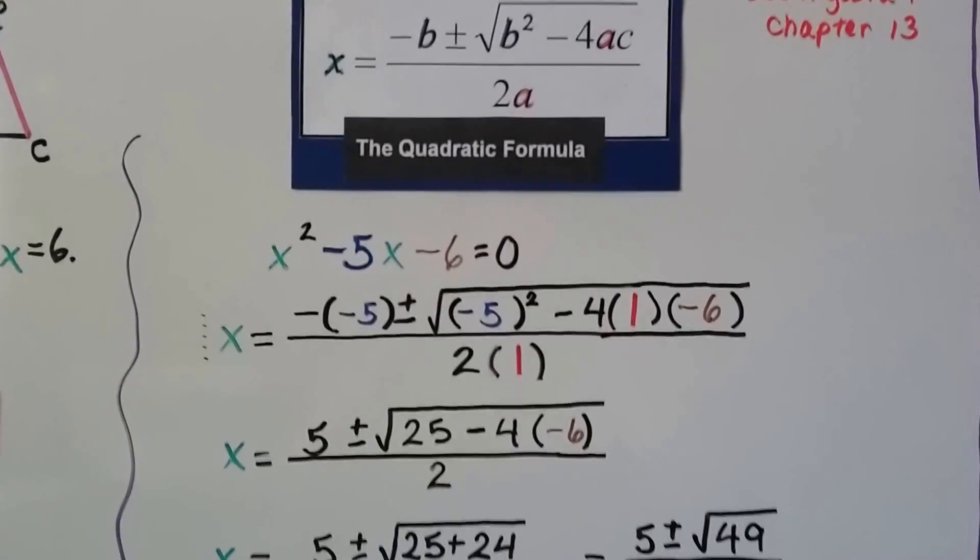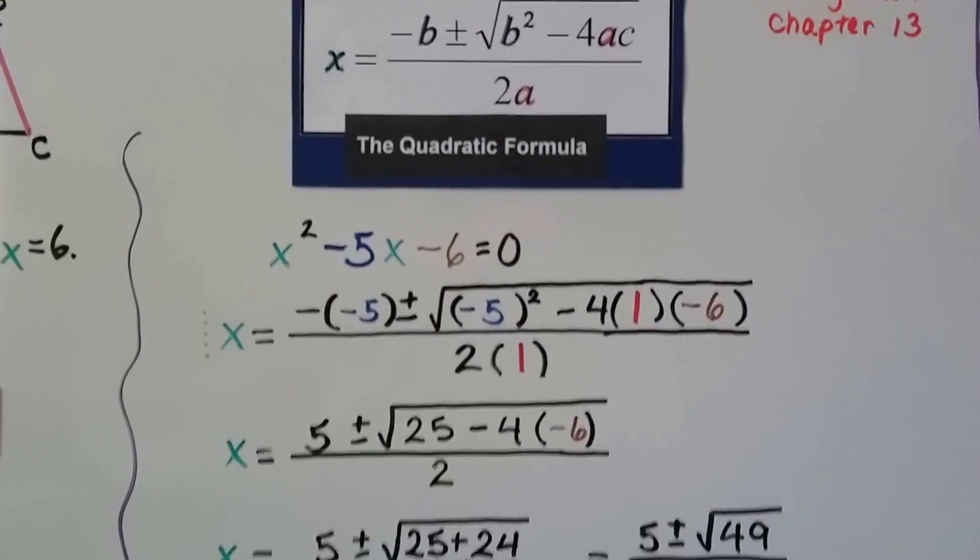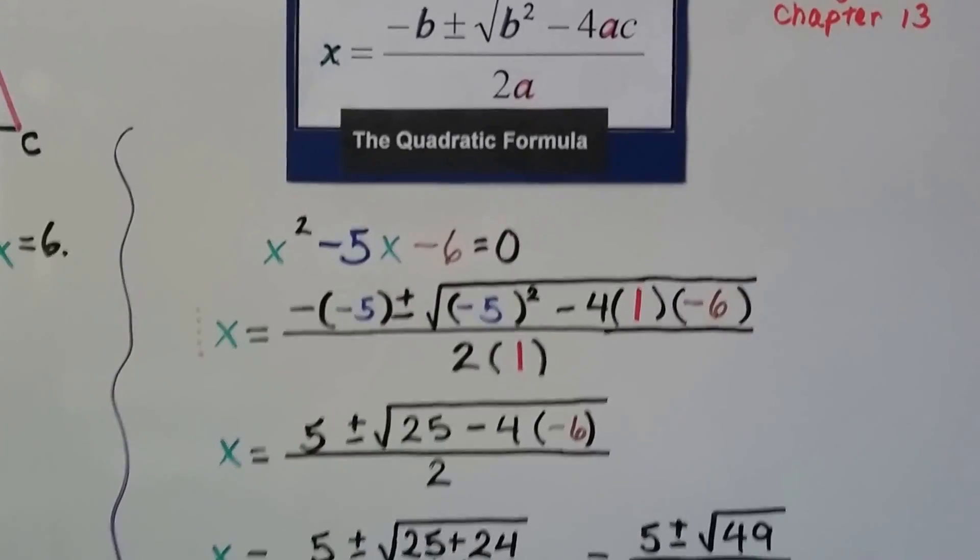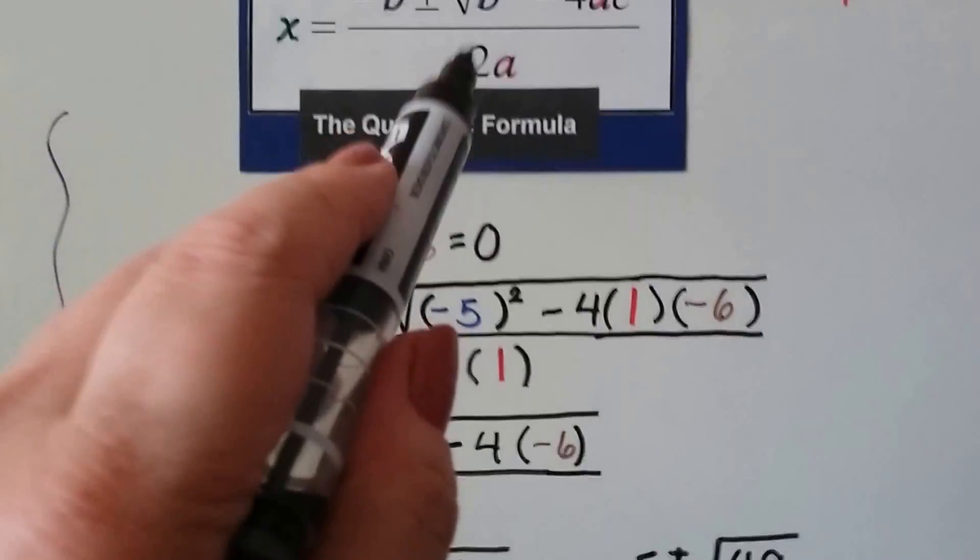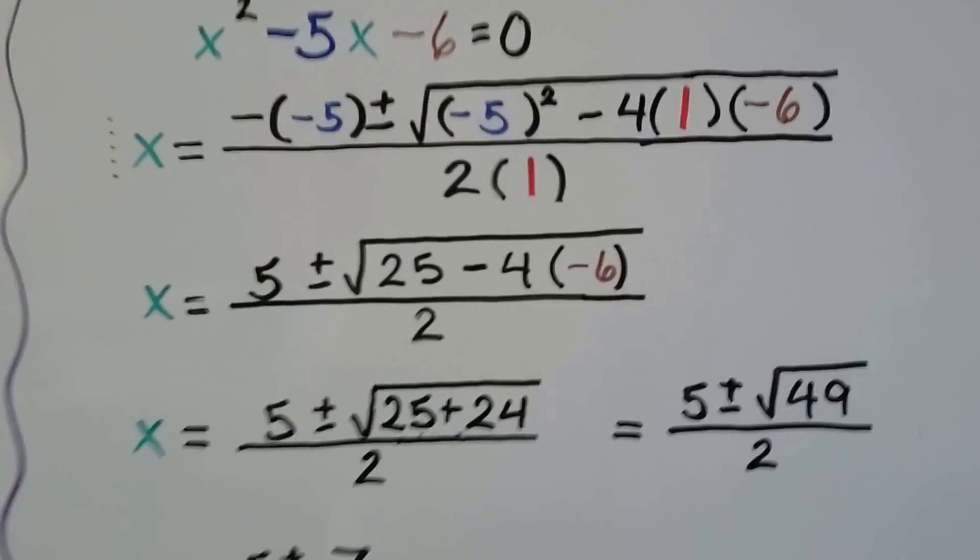Then, underneath the radical sign, we've got b², which means we have (-5)². Then, we subtract 4 times a, which is the 1, and c, which is the -6. And the whole thing is over 2 times a, which would be 2 times 1.